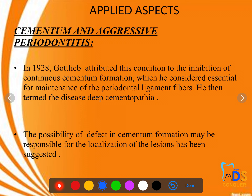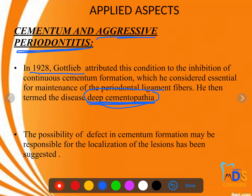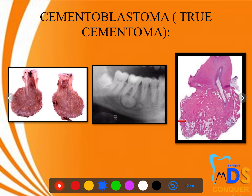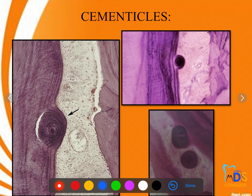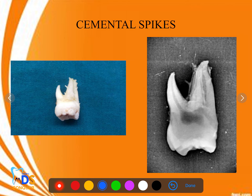Cementum was earlier associated with aggressive periodontitis, proposed by Gottlieb, and was called deep cementopathia — make a note of that name as the other name for aggressive periodontitis. Cementoblastoma is a true cementoma, related to tumor pathology you may have covered in oral medicine.